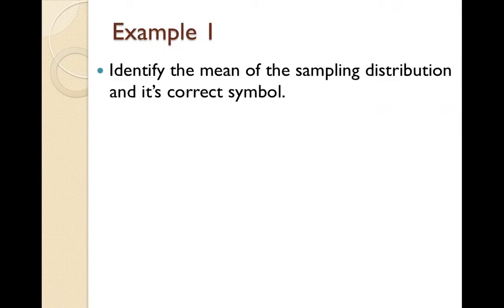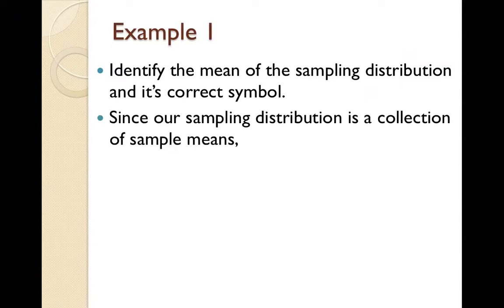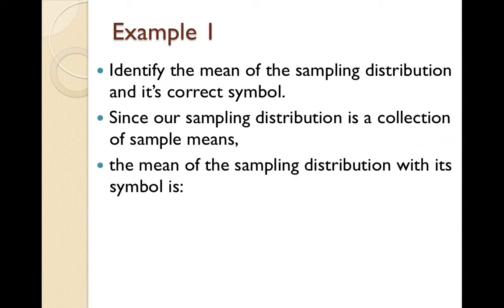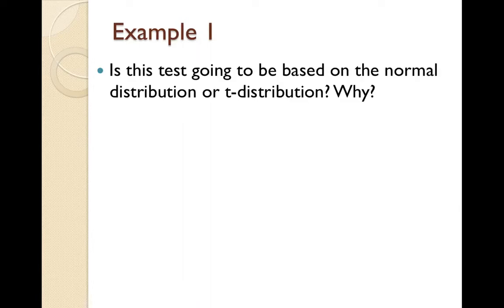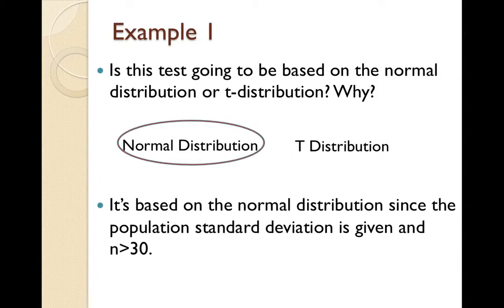The mean of the sampling distribution, symbolized as μ sub x̄, is 1.2 — the same as the mean of the population. Our sampling distribution is a collection of all the sample means. Is this test based on the normal distribution or the t-distribution? We're going to use the normal distribution because we are given the population standard deviation and n is greater than 30. When we don't have the population standard deviation, we'll start using the t-distribution.